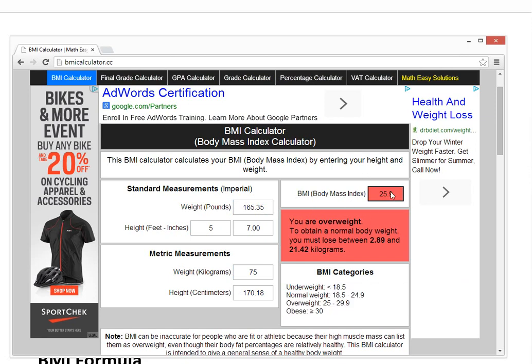And also it auto gets you the metric units. And then if you change the metric one, which is pretty cool, let's say 75, it auto changes everything in the Imperial measurements as well.